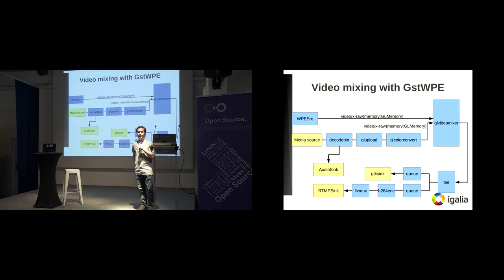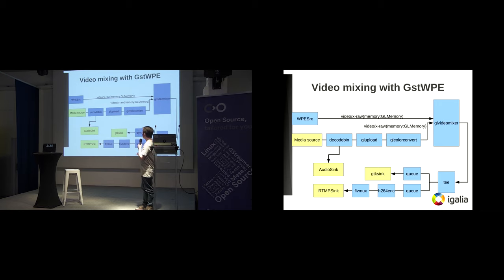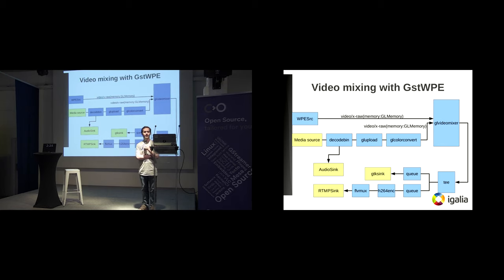As an example application, here I have two video sources — one coming from the plugin I wrote and another media source that could be the webcam, for instance. Those two sources are mixed in a GL video mixer, and the WebView is put on top of the other source. The WebView background is transparent, so they are overlaid together. You can do a preview with the GTK sink, and you can do RTMP streaming as well.